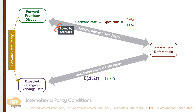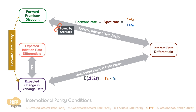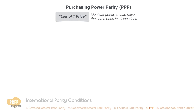So far we've looked at the relationship between exchange rates and interest rate differentials. Now we turn to examining the relationship between exchange rates and inflation differentials. The basis for this relationship is known as purchasing power parity, or PPP for short. The foundation of PPP is the law of one price, which states that identical goods should have the same price in all locations.